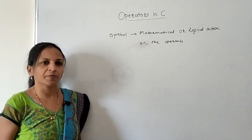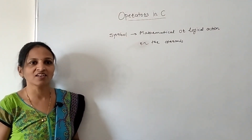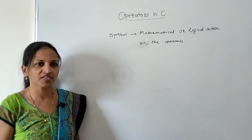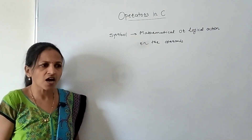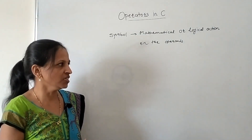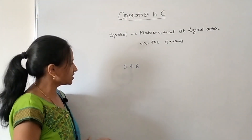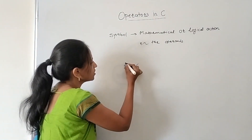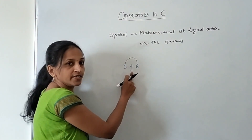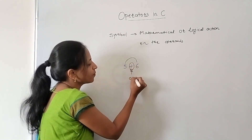In mathematics we do addition, subtraction — these are mathematical actions, and that type of operators are present in C language also, like plus and minus. Consider the expression 5 plus 6. Here, the plus symbol is acting on these two operands and doing addition of 5 and 6. This symbol is the operator, and the two values 5 and 6 are called operands.